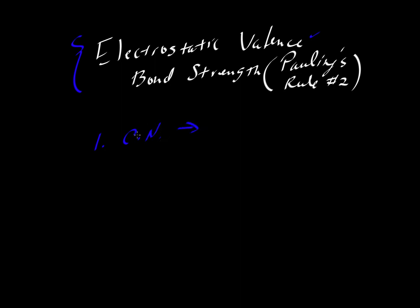There's another video where we talk about how the coordination number is related to radius ratios, and you can refer to that other video on Pauling's rule number one. The way it relates here is that the coordination number tells us about the number of bonds that a given cation will form with anions.